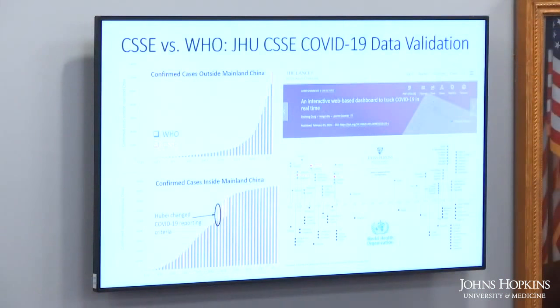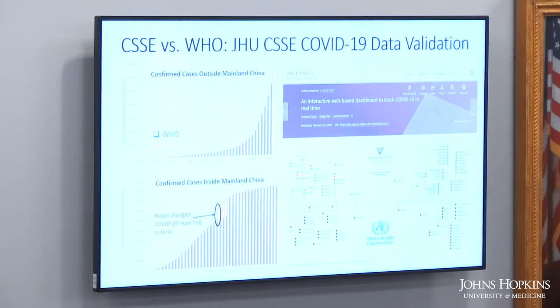This is all hosted out of the Whiting School of Engineering at Johns Hopkins. Regarding where the data comes from — in two minutes I can't explain all the details — but it spans the entire scope from pure manual data input to purely automated data input depending on the source, and also some combination of both. For example, China data is completely automated since February 1st, pulled from a particular website and updated every 15 minutes. At the moment the US data entry is completely manual, and the rest of the world is some combination between these two.